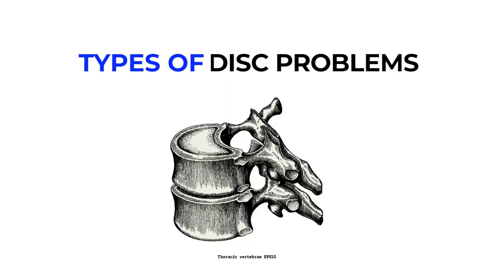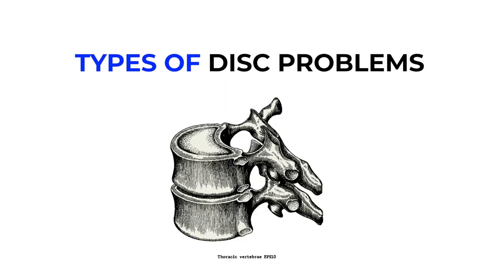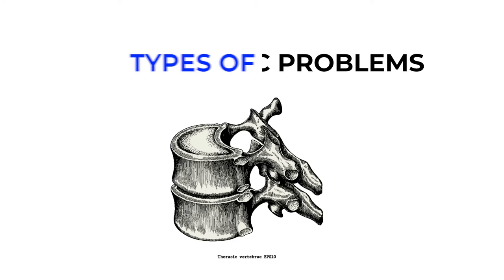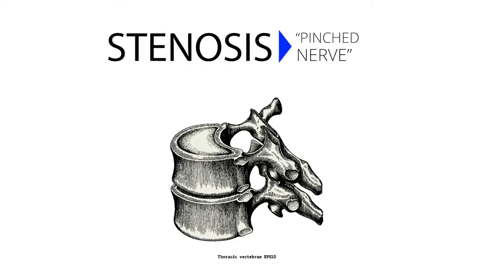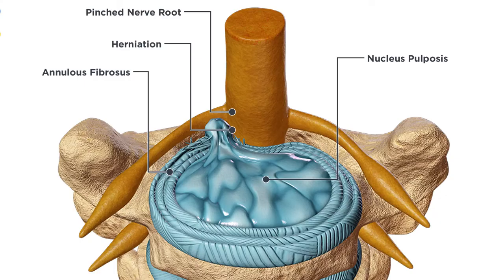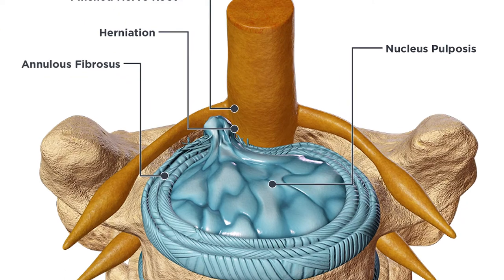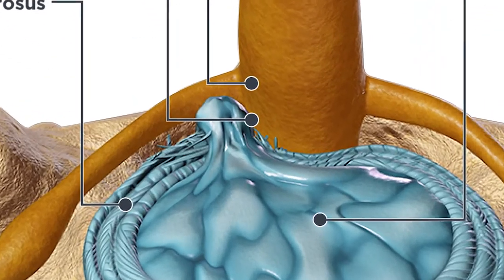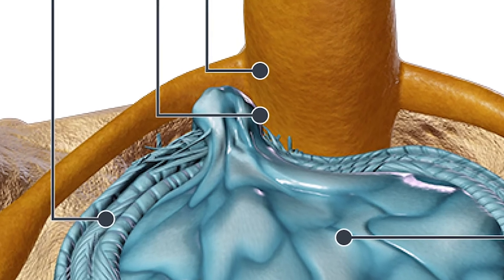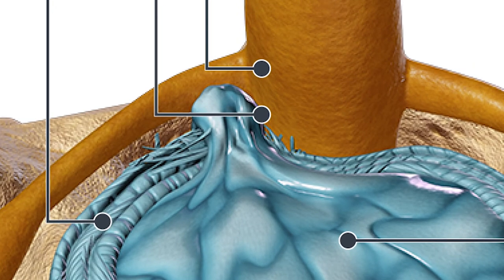There are two distinct categories of disc problems. The first is referred to as spinal stenosis, or a pinched nerve. When a patient has symptoms of spinal stenosis, the disc itself is not painful, but rather the material that is leaking out of the inside of the disc is pinching or irritating a nearby nerve.